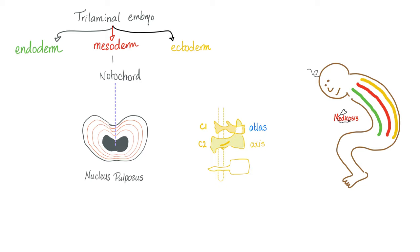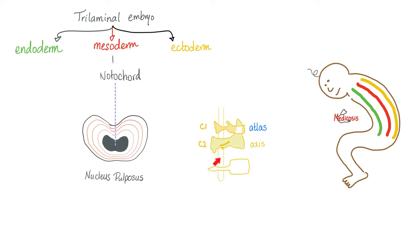The mesodermal notochord gives you the nucleus pulposus of the intervertebral disc. Between each pair of vertebrae you have an intervertebral disc made of two parts: the outer annulus fibrosus and the inner nucleus pulposus. The spinal cord runs behind the vertebral bodies — posterior to them.